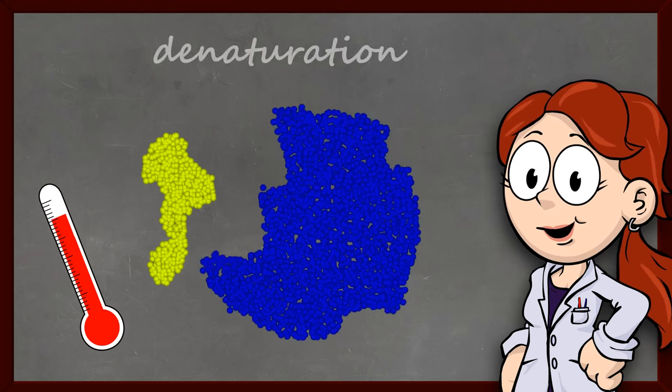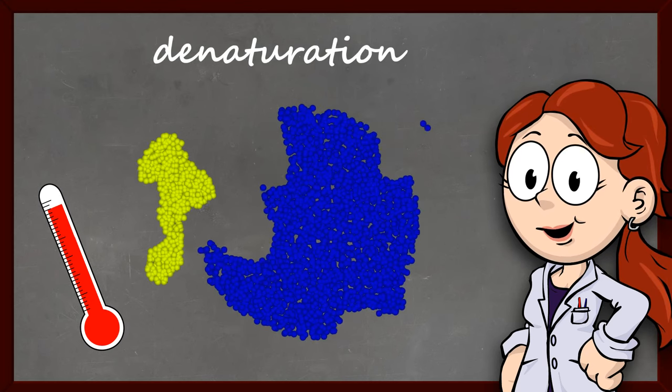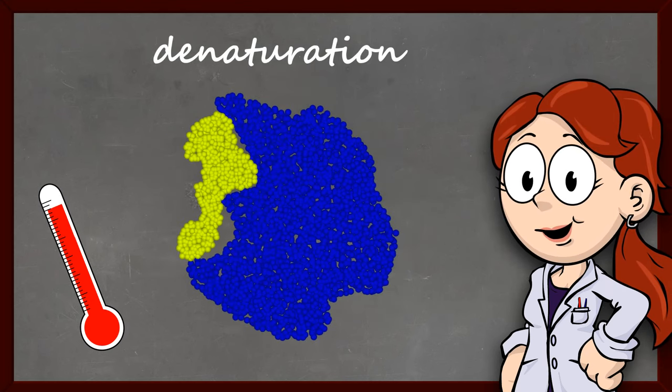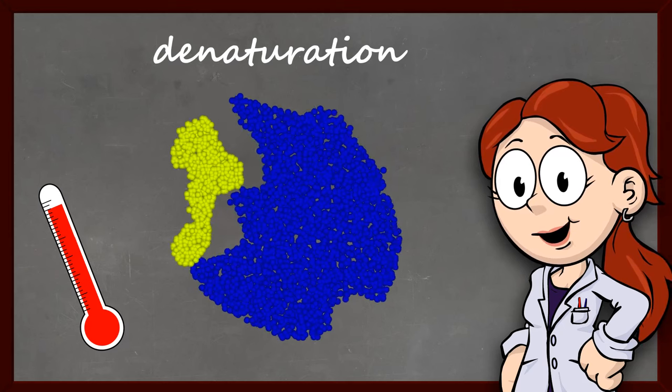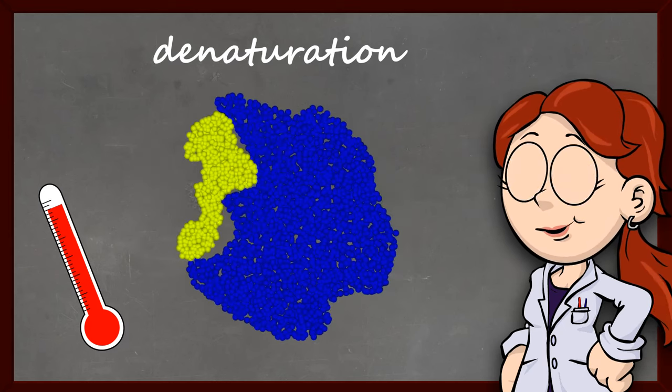Fluctuations from the optimal range can lead to enzyme denaturation. Denaturation alters the shape of an enzyme, including its active site, which can prevent the enzyme from being able to interact with its substrate.